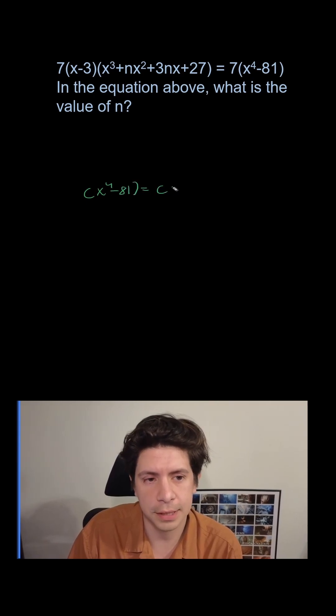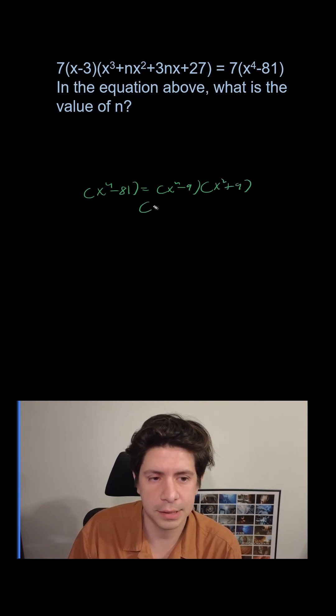It's going to equal (x² - 9)(x² + 9), and then I'm going to factor the x² - 9, so I get (x + 3)(x - 3).